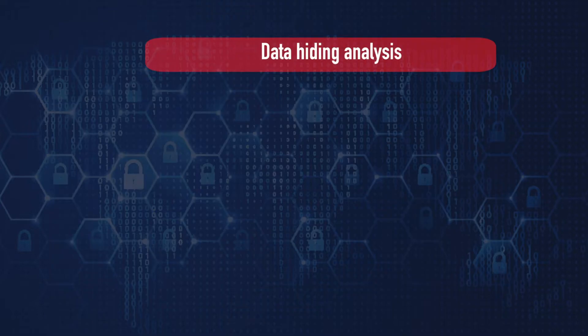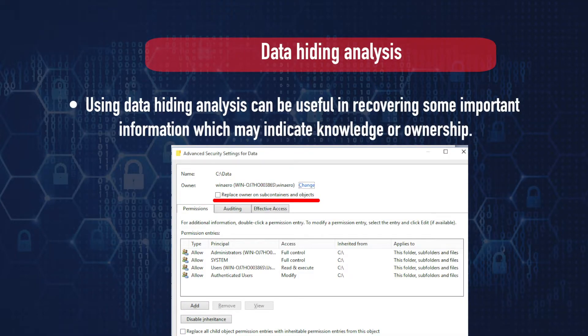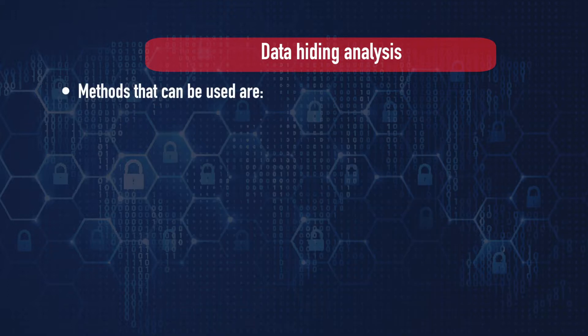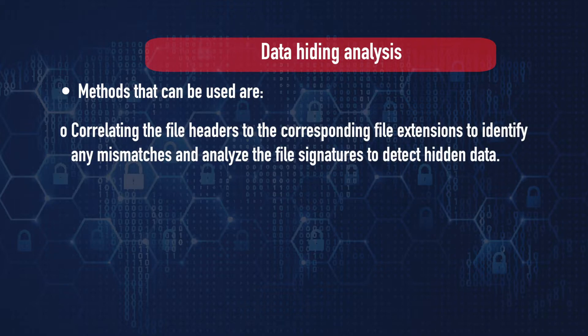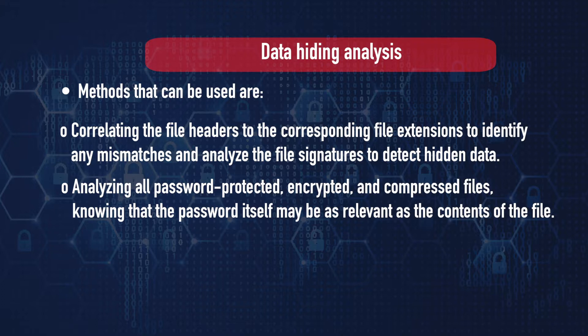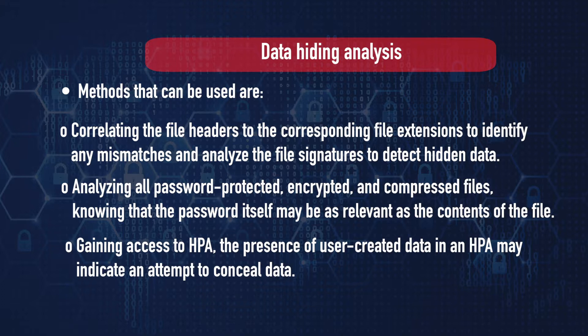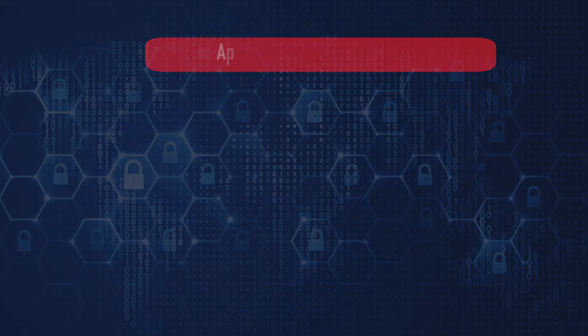Next is data hiding analysis. Using data hiding analysis, one can recover important information that may indicate knowledge or ownership. Methods include: correlating file headers to corresponding file extensions to identify mismatches and analyzing file signatures to detect hidden data; analyzing all password-protected, encrypted, and compressed files — knowing the password itself may be as relevant as the contents of the file; and gaining access to the HPA, where the presence of user-created data may indicate an attempt to conceal data.